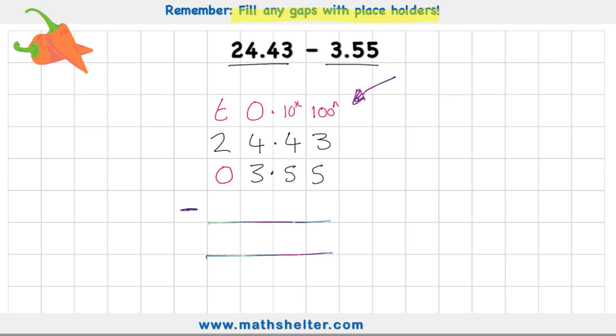Three, subtract five. Well, if I have three, I cannot take five away. So I'm going to have to look next door and see that I have a four. Borrow from the four, turning it down to a three. I'm borrowing a whole one in the hundredths column. Now I have 13, subtract five. 13, subtract five is eight. Three, subtract five I can't do. Look next door again. 13, subtract five is eight. Put back my decimal. Now I have three, subtract three is zero. And two, subtract zero is two.